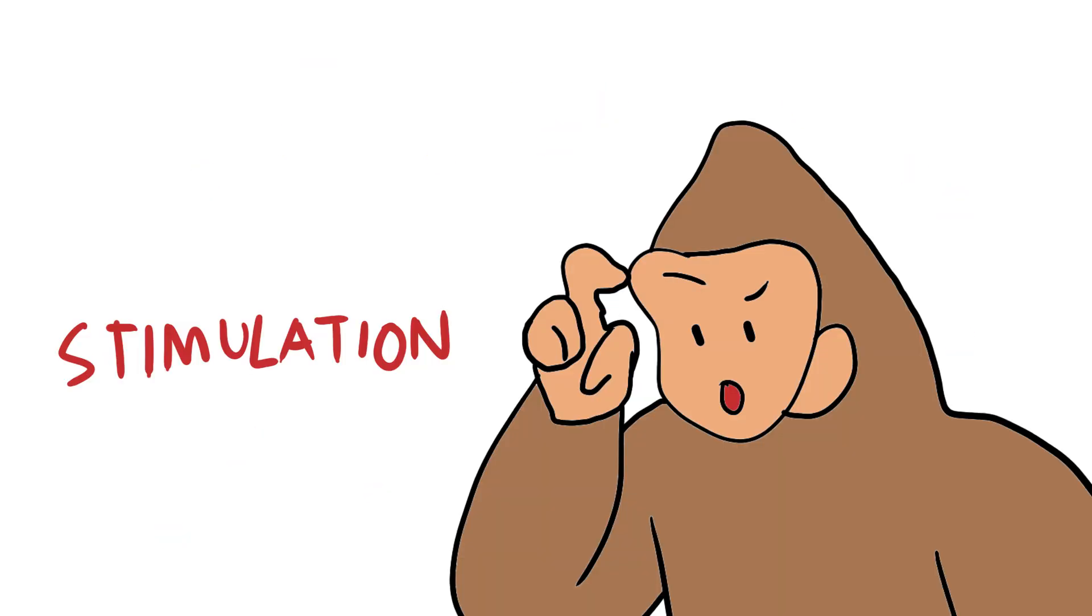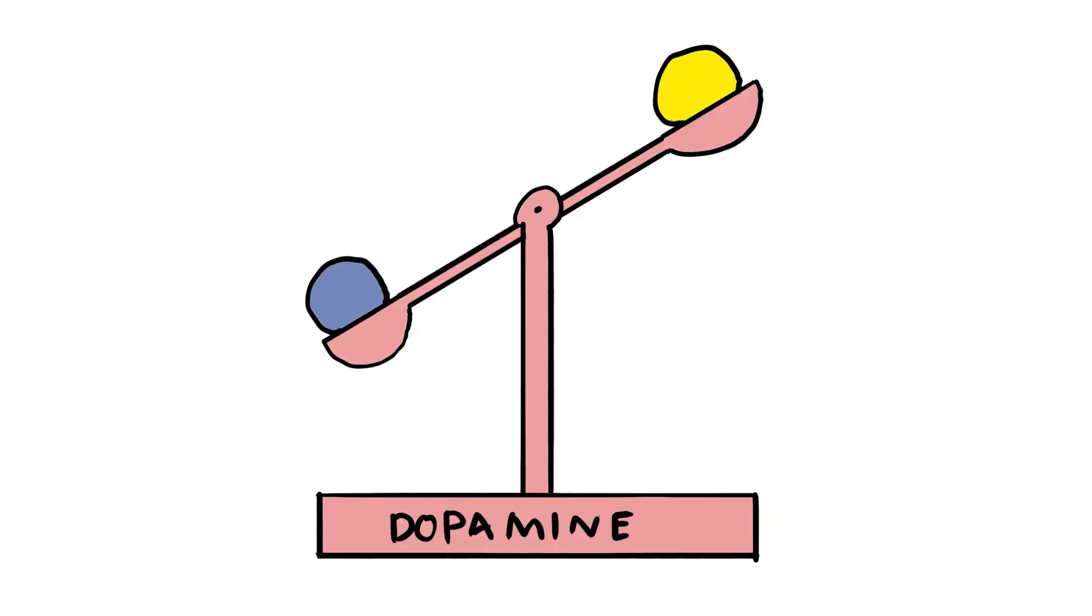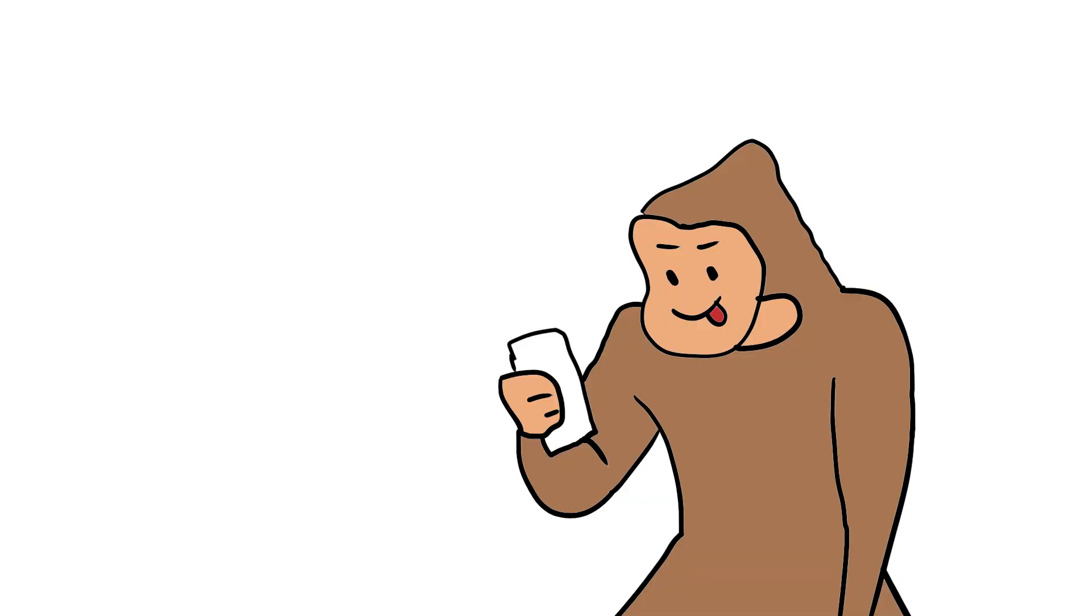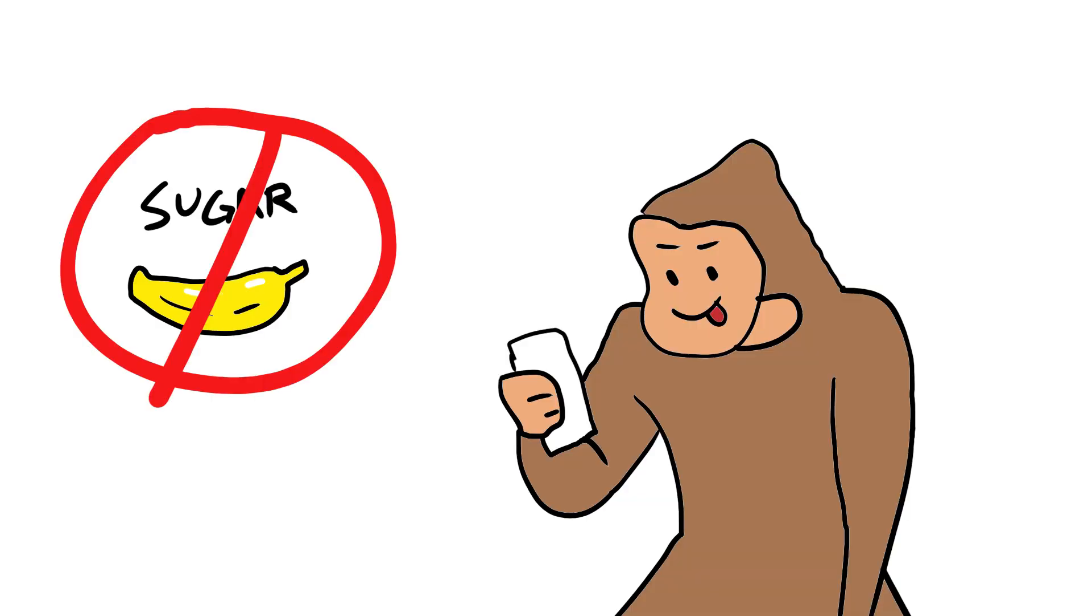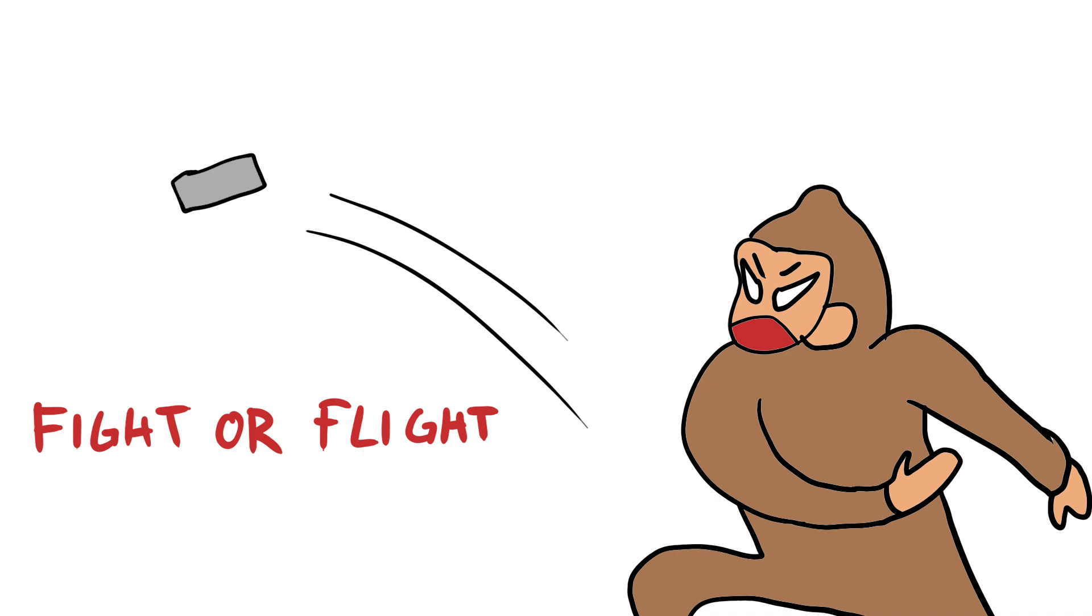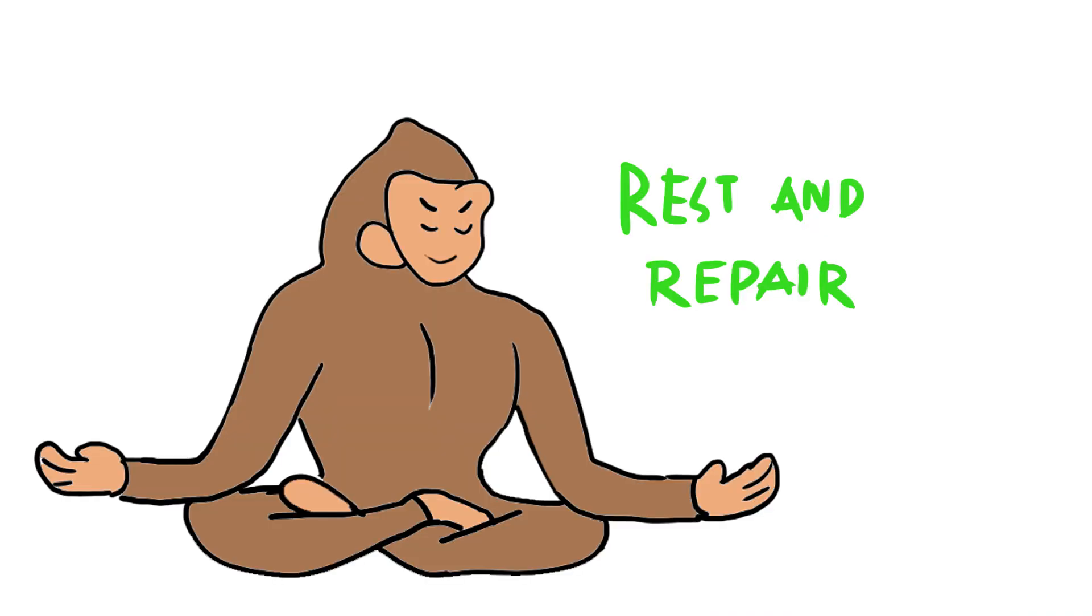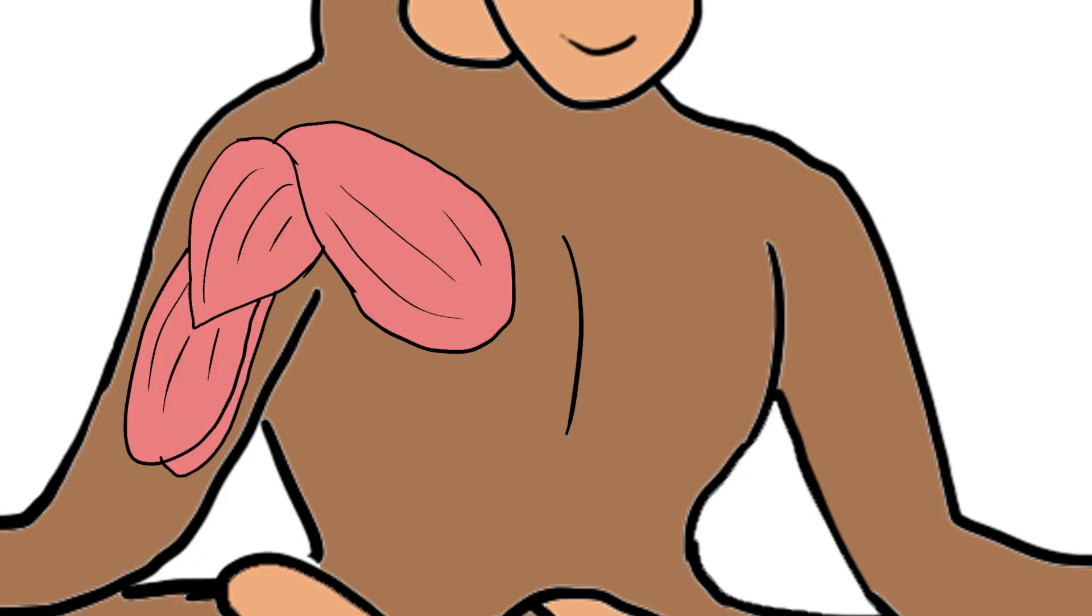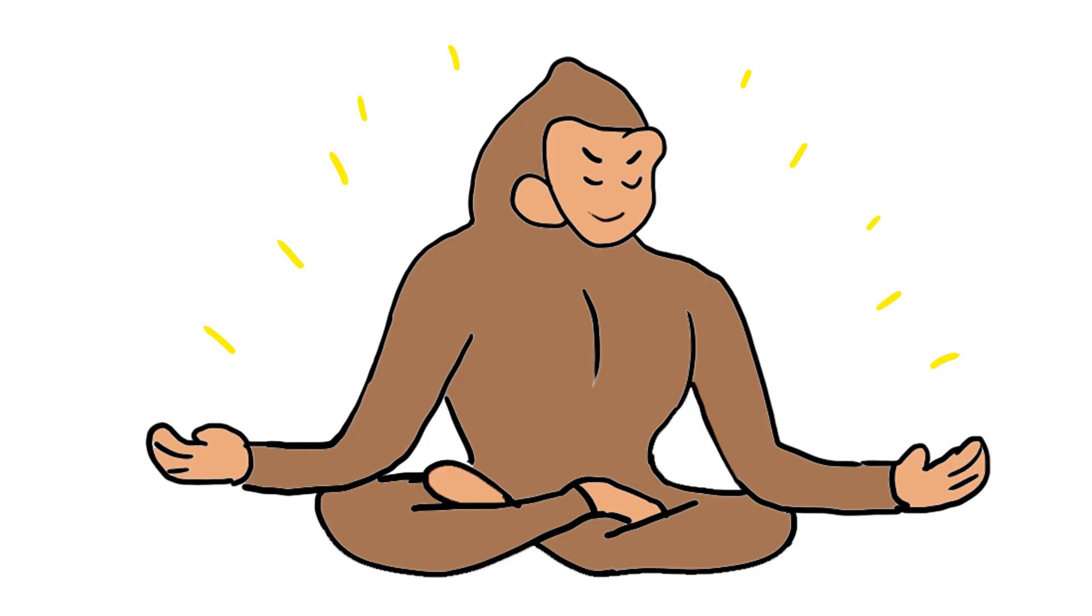Something magical happens to dopamine too. When monkey stops chasing constant stimulation, his brain starts producing dopamine in a balanced, natural rhythm again. He no longer needs constant scrolling or sugar bananas to feel okay. Breathing slow also calms monkey's nervous system. The body moves from fight-or-flight into rest and repair.